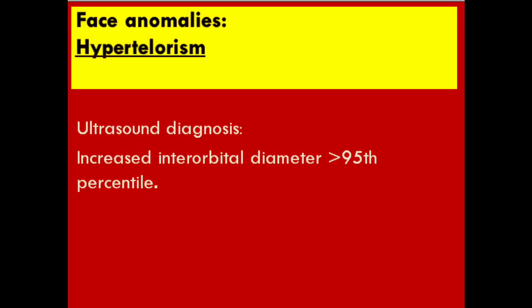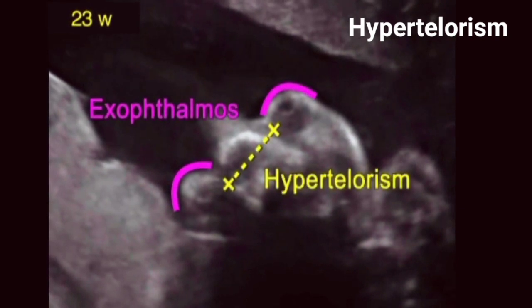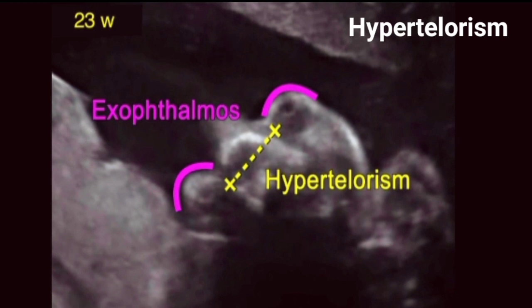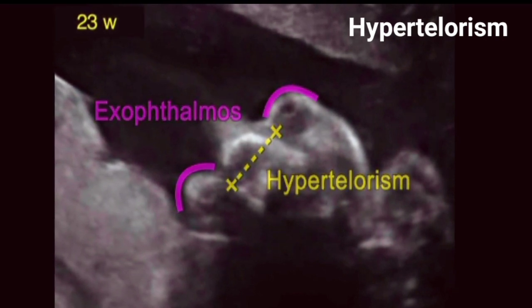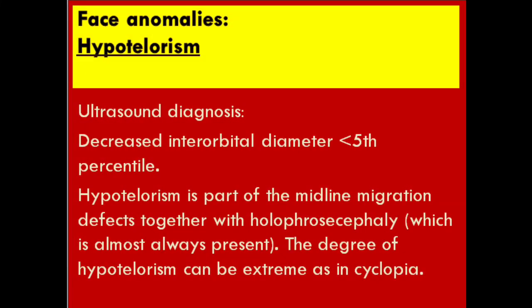Hypertelorism: ultrasound diagnosis — increase in inter-orbital diameter, more than the 90th percentile. Hypotelorism: ultrasound diagnosis — decrease in inter-orbital diameter, less than the 5th percentile. Hypotelorism is part of the midline migration defects, together with holoprosencephaly, which is almost always present. The degree of hypotelorism can be extreme, as in cyclopia.